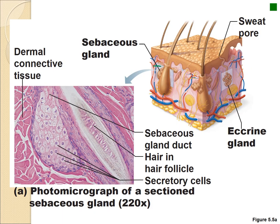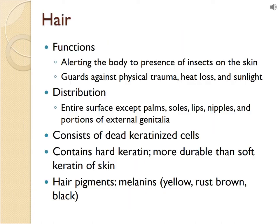Looking at sebaceous glands under the microscope, you can see them near a hair follicle — a big chunk of gland with a very tiny duct that crawls up into the hair follicle. They're not twisted and turned like the eccrine glands; this is a much thicker, more oily secretion.